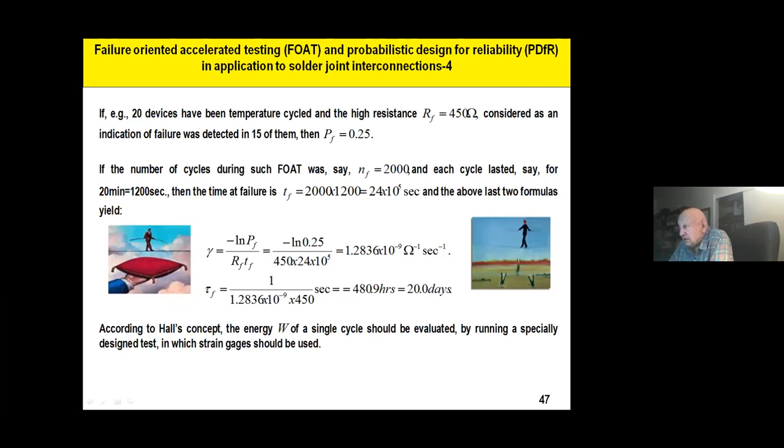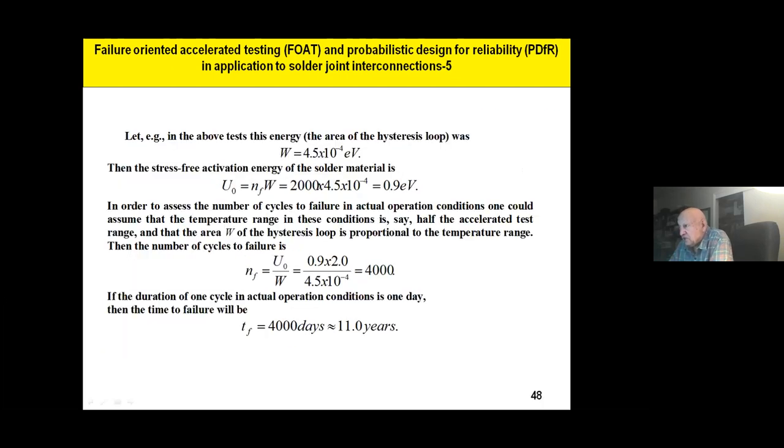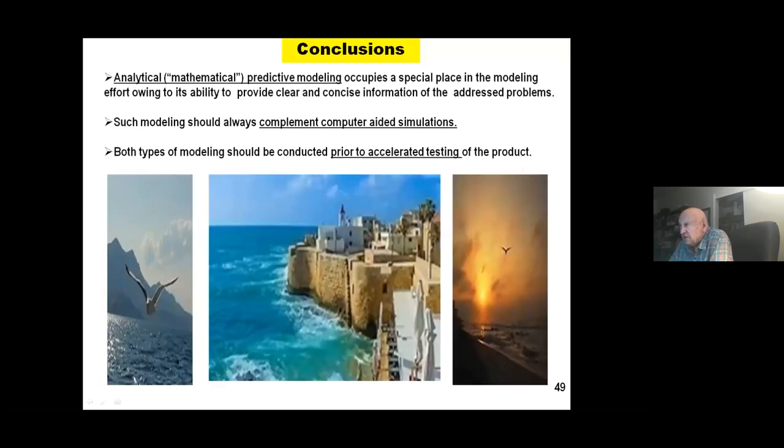Calculations have shown that, let's say, the mean time to failure will be 20 days for these solder joints during accelerated testing. In real life, and we will bridge the gap between what we see as a result of calculated stresses and what you'll supposedly get in real life, it will be 11 years.